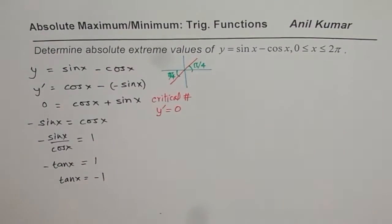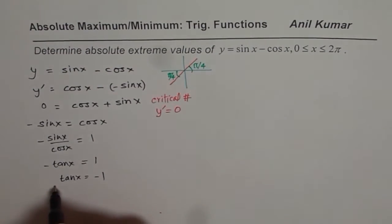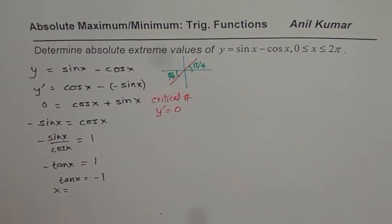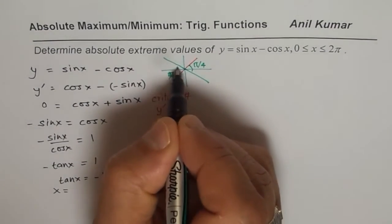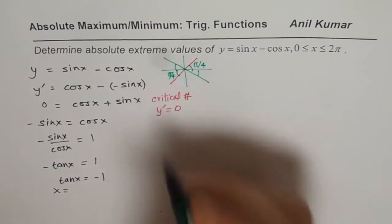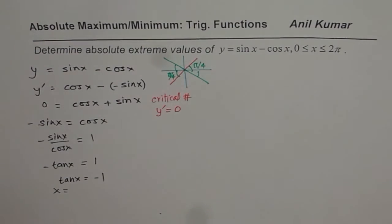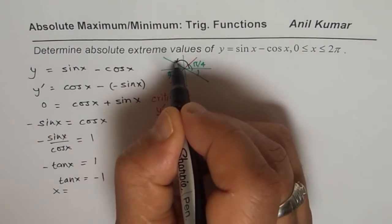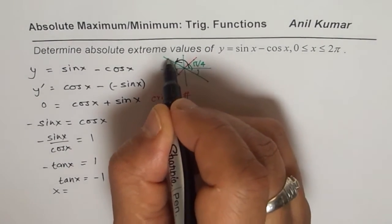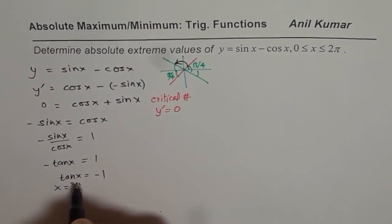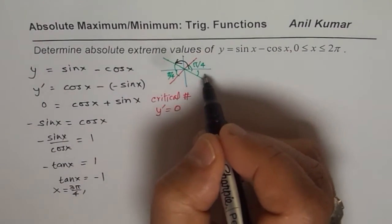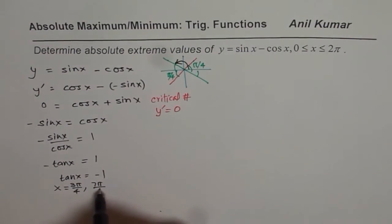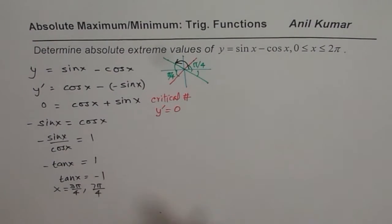Pi by 4 — so we know the acute angle. From here we get two critical points. For tan x equals minus 1, the relevant quadrant gives us 3 pi by 4. The other value, 1 less than 8 in the cycle, is 7 pi by 4. So these are our two critical numbers.